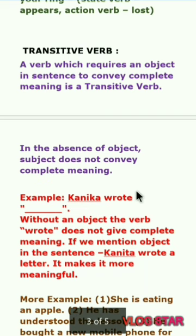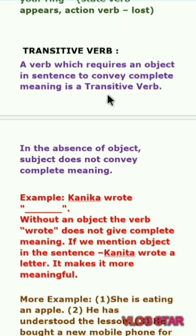Now see what is a transitive verb. A verb which requires an object in a sentence to convey complete meaning is a transitive verb. ऐसे verb जिन्हें किसी भी sentence में किसी object की जरूरत पड़ती है अपने उस sentence के meaning को complete करने के लिए, उन्हें हम कहते हैं transitive verb. In the absence of an object, the subject alone does not convey complete meaning.